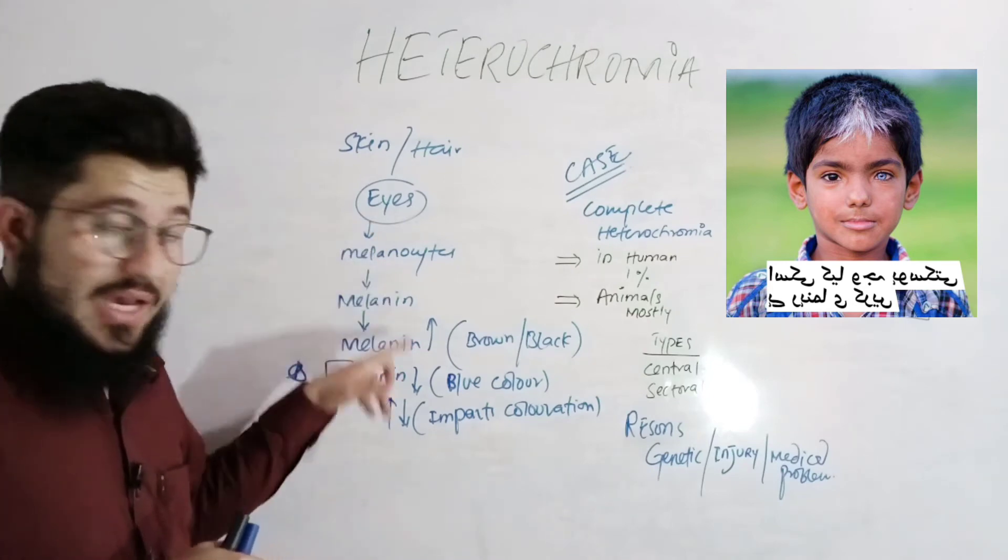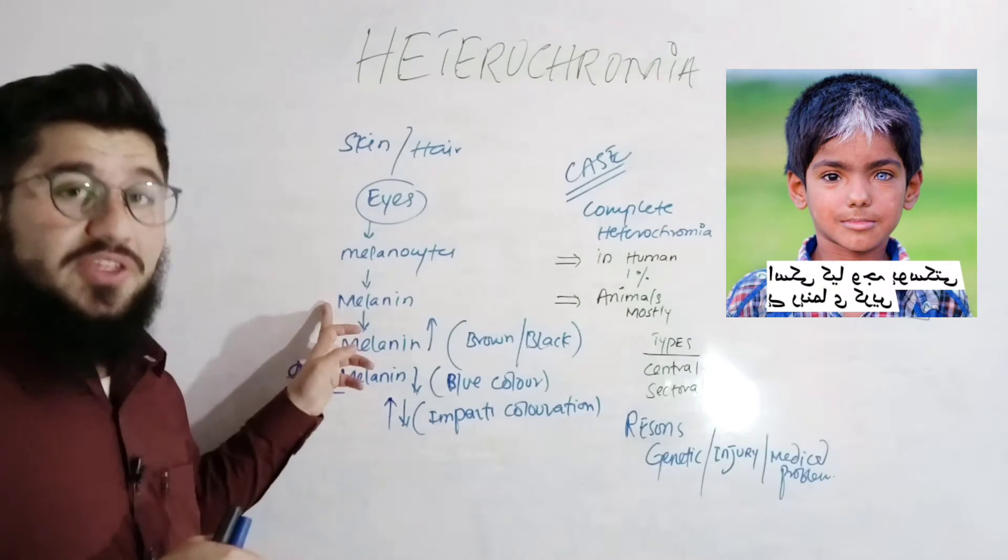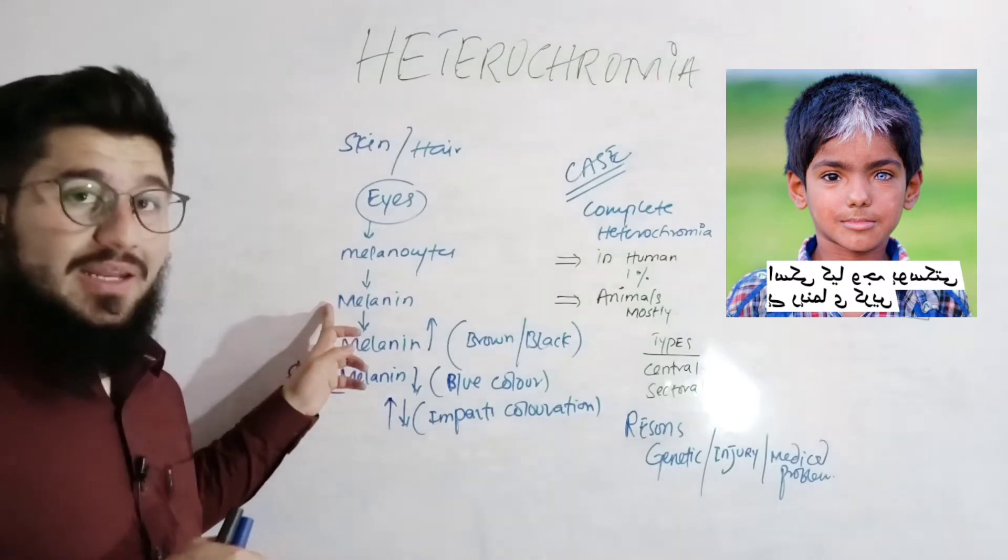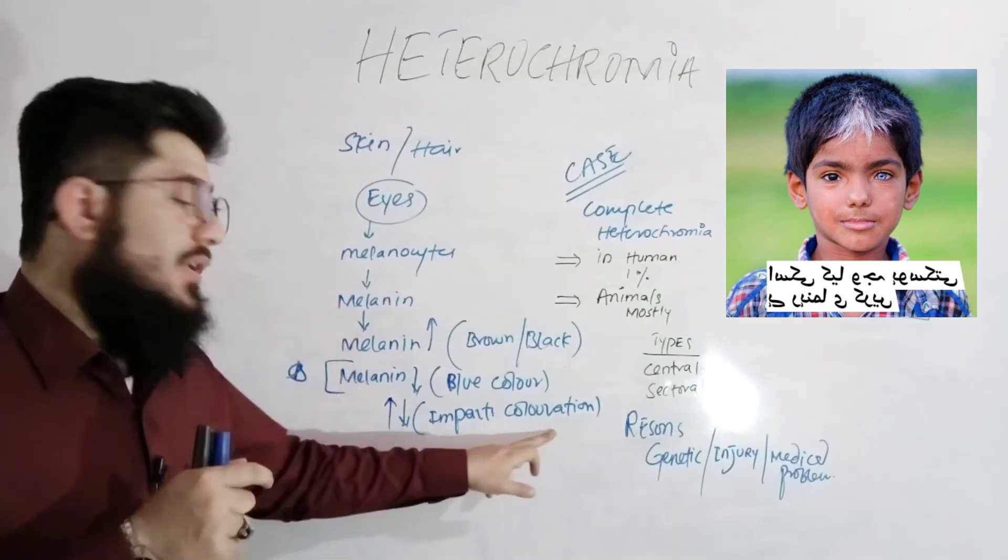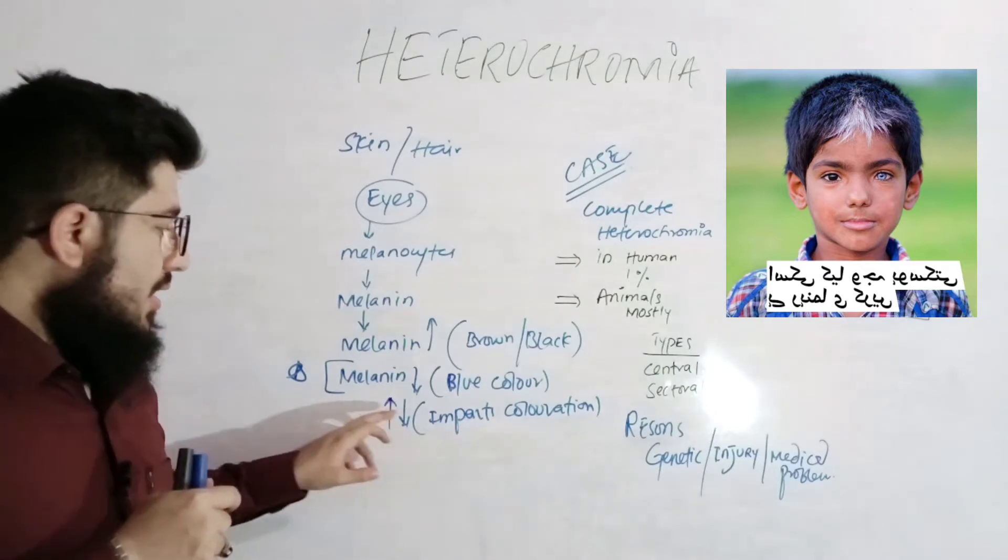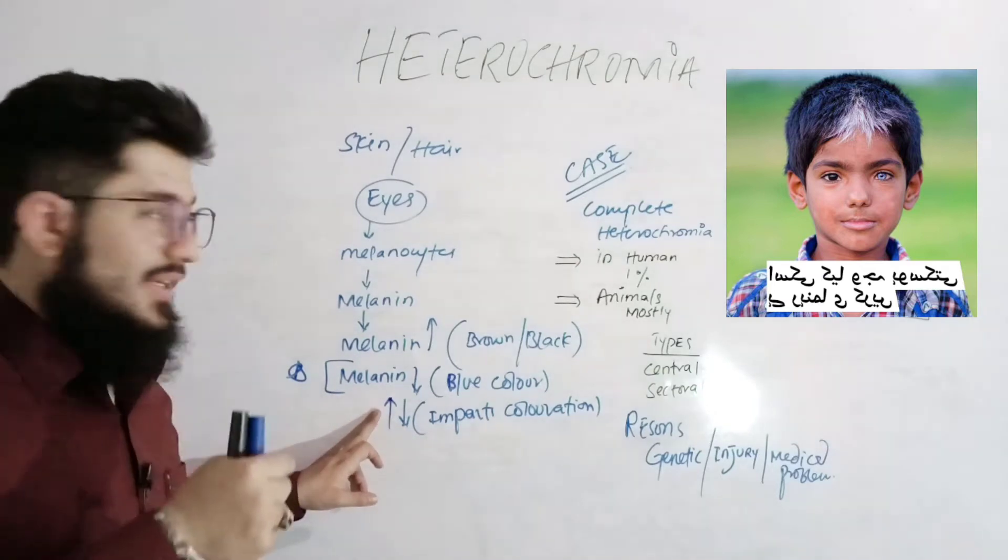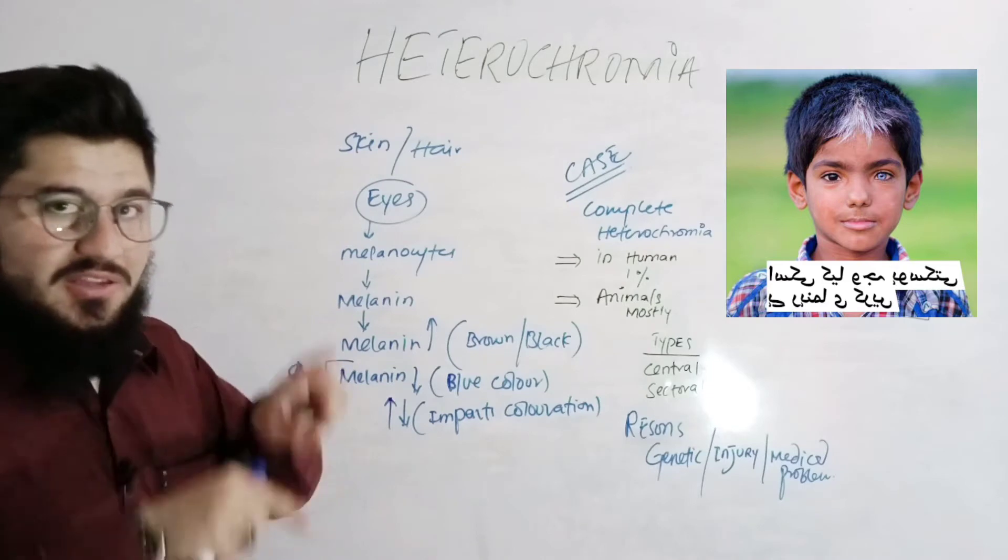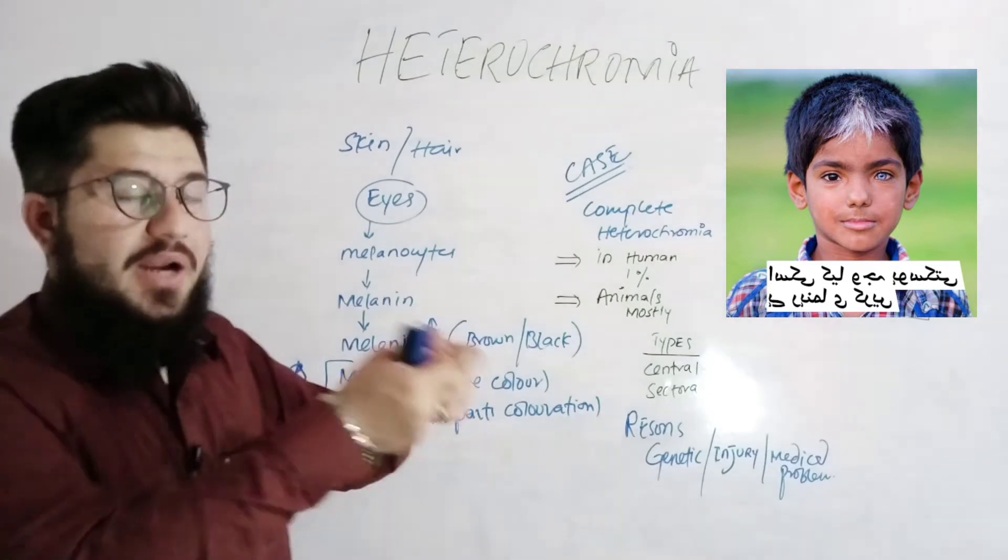So we got the concept from here that this is a particular thing, protein melanin, which is responsible to impart different colors when it is in excess or in less amount. So the difference in the melanin production is responsible to impart different colors.